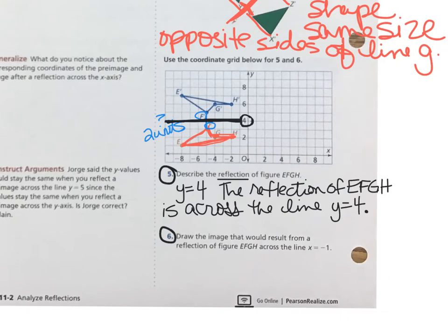Since the line Y equals 4 splits the distance between points F and F prime, we say that the line of reflection is Y equals 4.